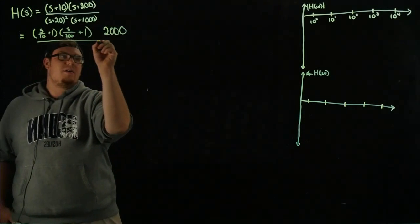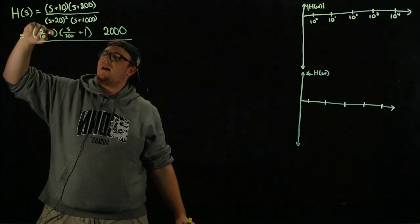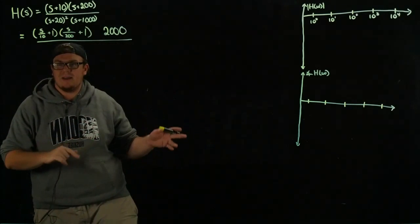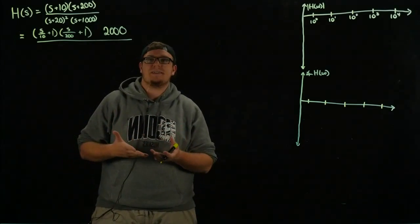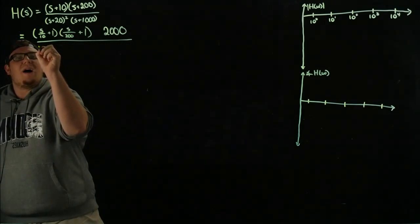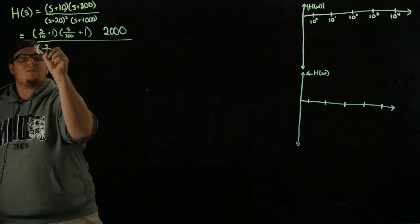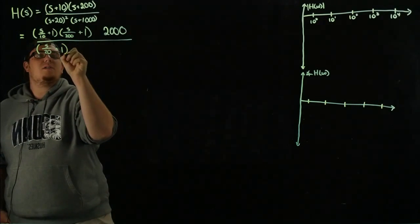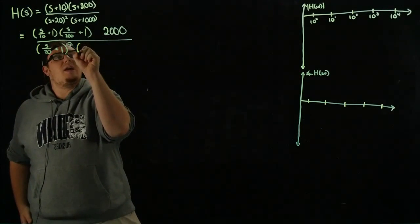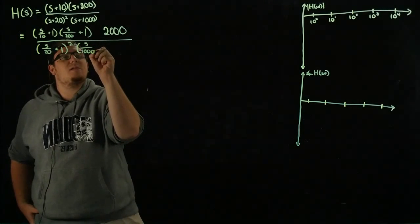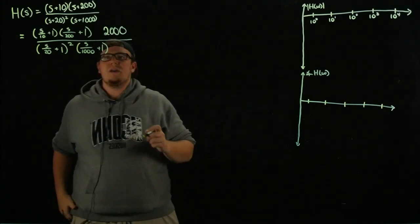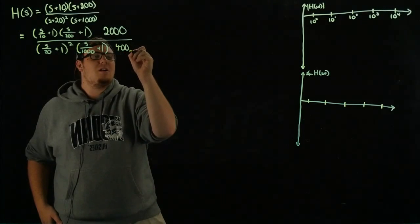That's our rewritten numerator. Because we have 1 here and 10 underneath, 10 is one of our break frequencies — the frequency where things happen in the Bode plot, whether it be an increase in magnitude or a change in phase. For the denominator, we get (S/20 + 1) squared — pulling out two 20s — and (S/1000 + 1), pulling out 1000. Combined with the 400 from the squared term, the denominator constant is 400,000.